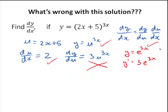So what is the right solution if this is the wrong solution? And how could we have predicted something going wrong? Alright. At this stage here, where you've got y equals u to the power of 3x, this is a major problem.